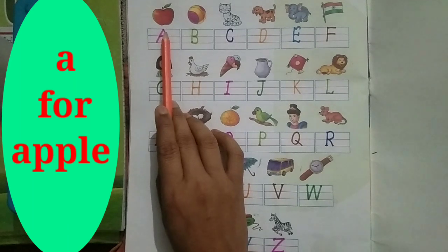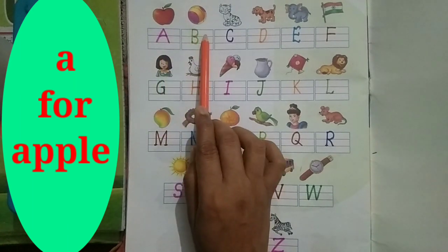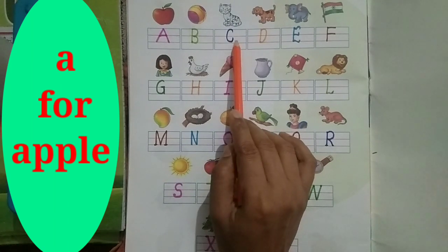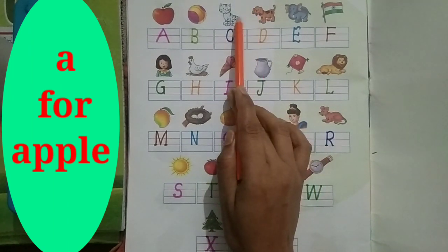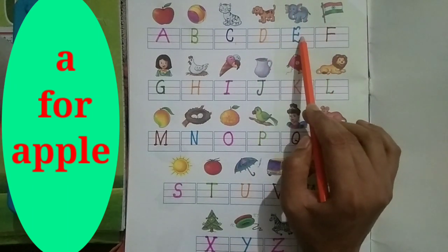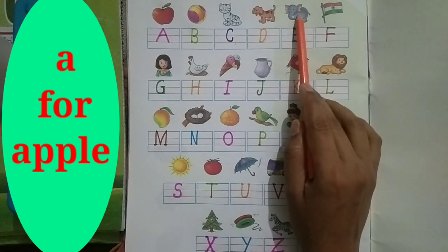A for apple, B for ball, C for cat, D for dog, E for elephant.